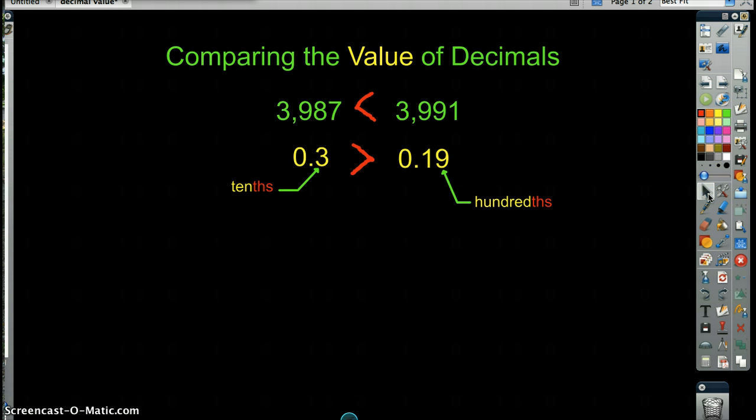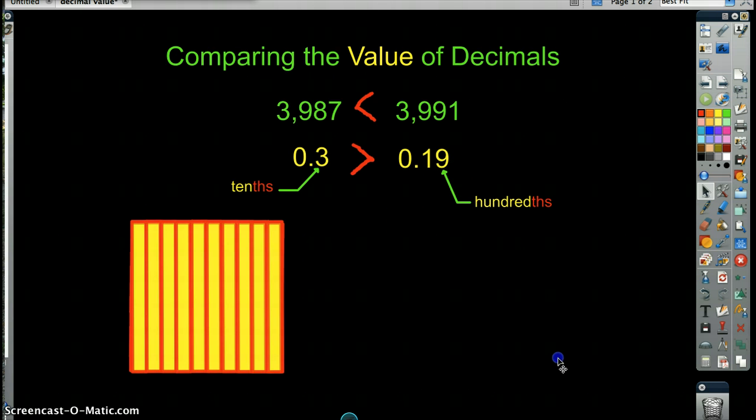Now, I think a lot of kids will look at that number, and they'll say, but wait a second, nineteen is more than three. This has two digits. This has one digit. This has to be greater. Let me show you why that's not the case. Okay, so here is a model of tenths, right? This is a square that's cut into ten parts.